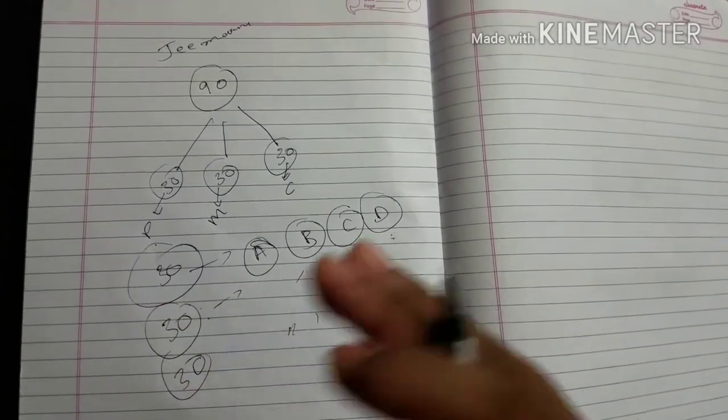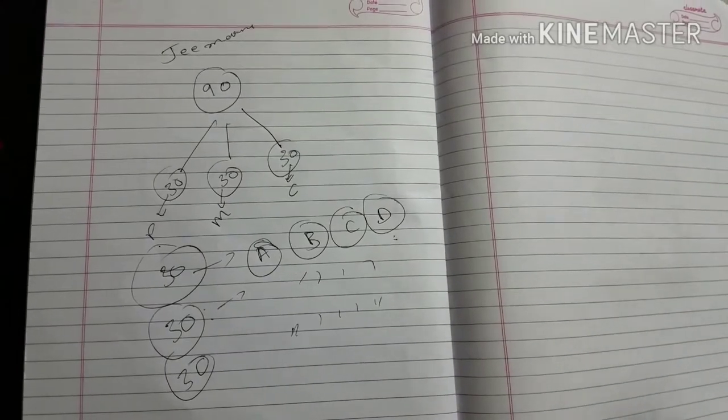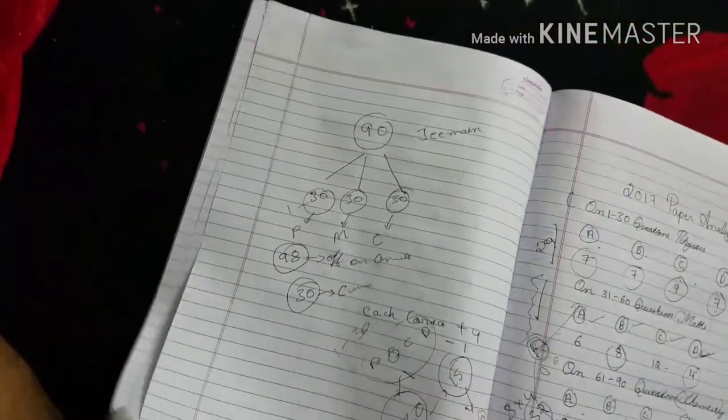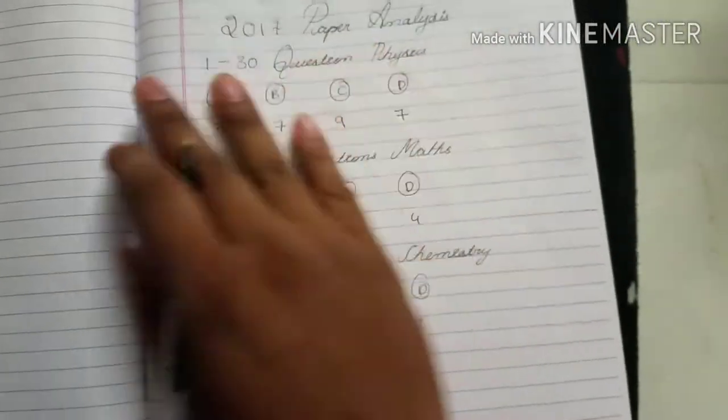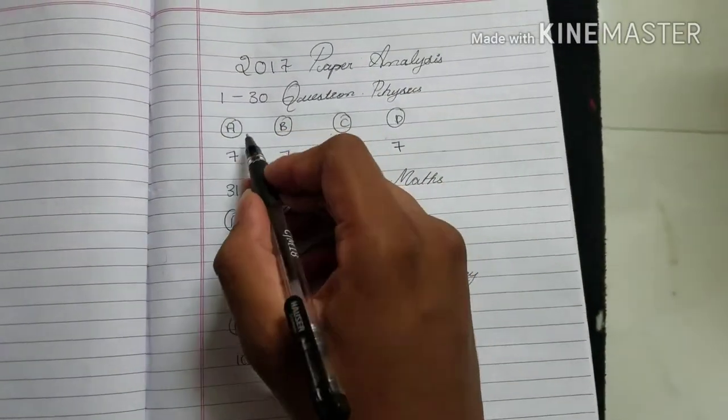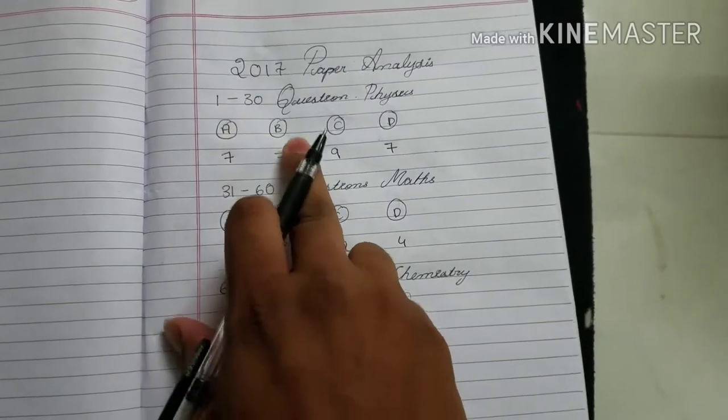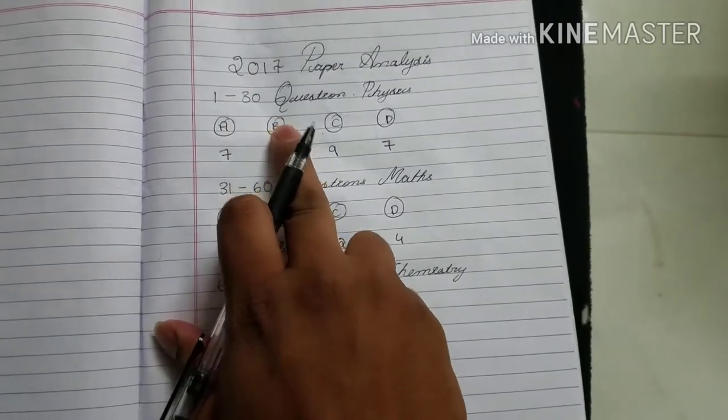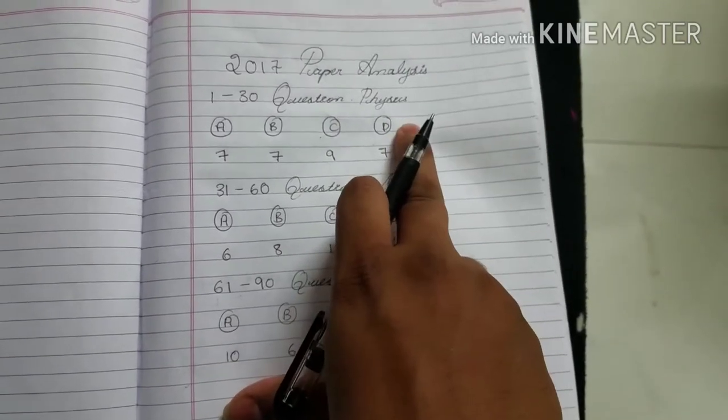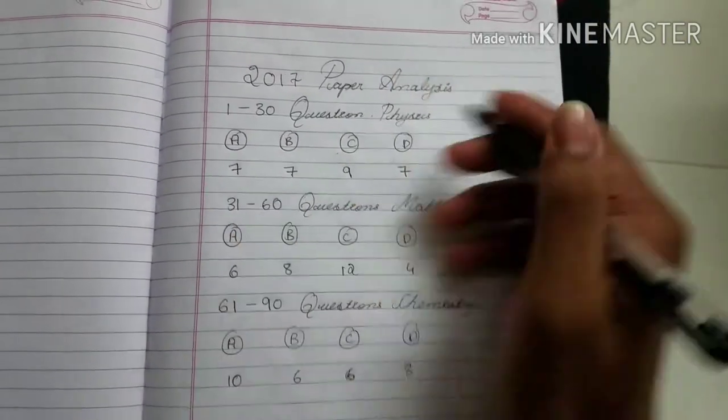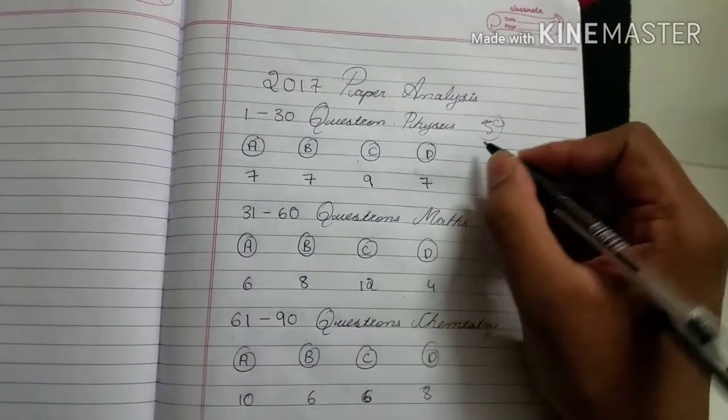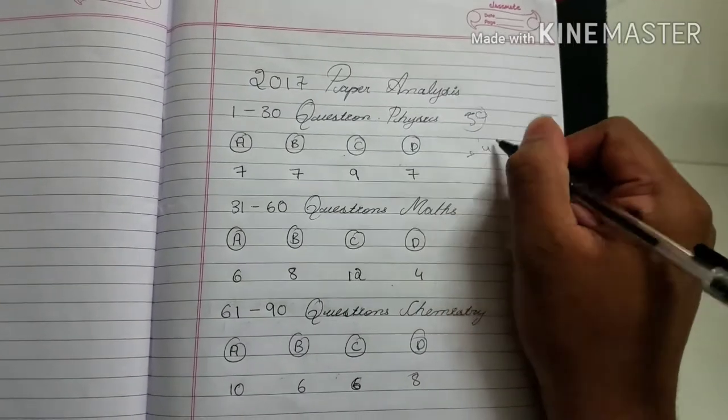By my analysis of 2017 question paper, I am going to now share my trick. In the first 30 questions in physics, 7 options are A, 7 options are B, 9 options are C, and 7 options are D. So if you know at least one answer out of 30 questions, please mark it and you will get plus 4 from that.